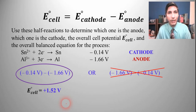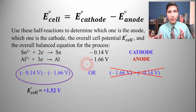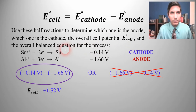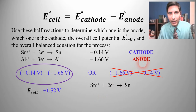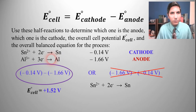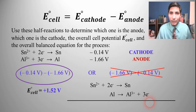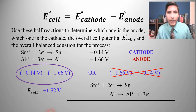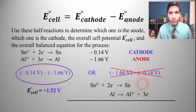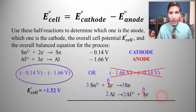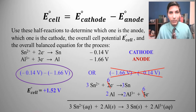Now we need the overall balanced equation. The cathode is the reduction, so we leave that as written. The anode is oxidation, but it's written as a reduction, so we flip it: aluminum yields aluminum 3+ and three electrons. To cancel the electrons, we multiply the top half-reaction by three and the bottom by two so that six electrons cancel on both sides. Adding these together gives us the overall balanced equation, with states included.